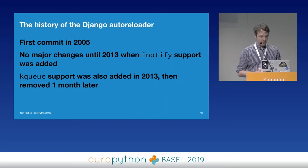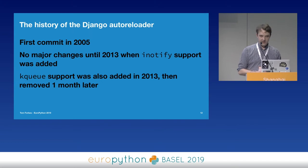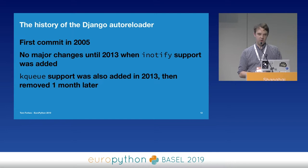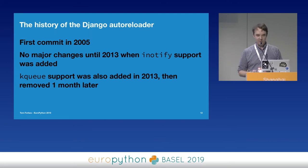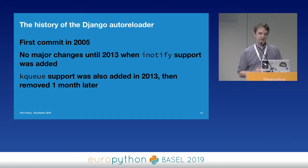A little bit of history on the Django auto-reloader. The first commit was in 2005. No major changes until 2013 when iNotify support was added. KQueue support was added in 2013 and removed one month later, which is never a good sign. Django code is usually very high quality with emphasis on testing and readability, but the auto-reloader was an old and crusty part. The code was not idiomatic, very hard to extend, and essentially append-only. We needed to add new features that just wouldn't work with the current implementation, so we needed to rewrite it.